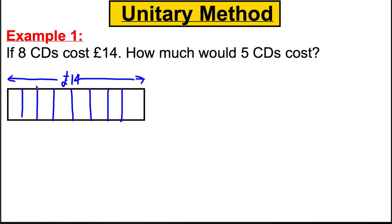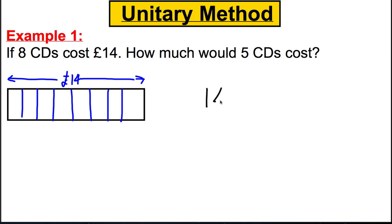No whole number can go in here because 1 added up eight times would be 8, and 2 added up would be 16. So it's in between 1 and 2. We're going to use our calculator — we are sharing 14 by 8, or doing 14 divided into 8 parts. So we type 14 divided by 8 and we get 1.75.